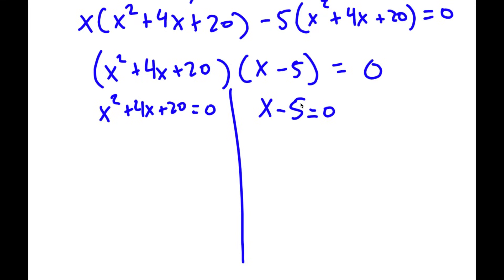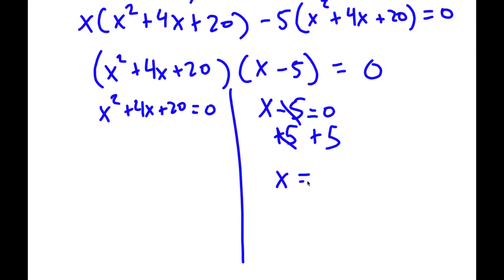For x minus 5 equals 0, this is actually really simple. All I have to do is add 5 on both sides — these two cancel out — and I'll be left with x is equal to 5.